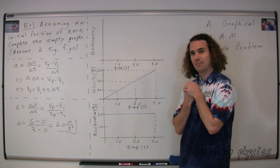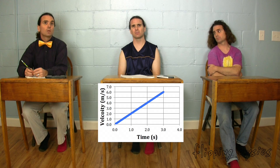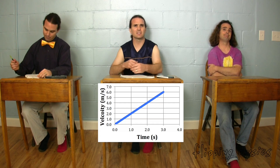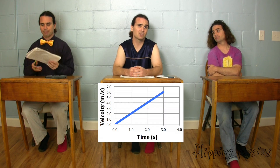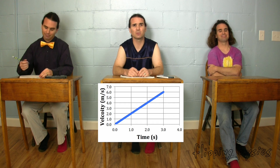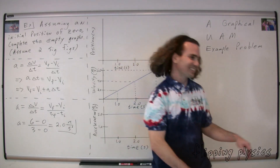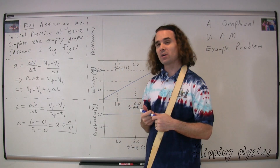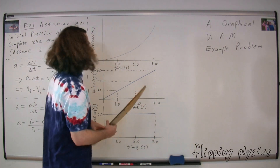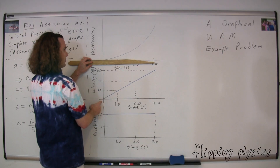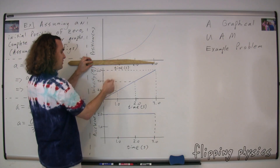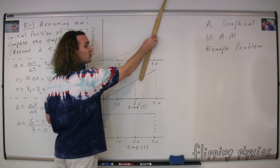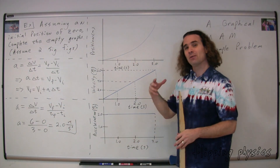Bobby, what will the general shape of the position versus time graph be? Honestly, I have no idea where to start. Remember that the slope of a position versus time graph is velocity, and on the graph the initial velocity is zero and increases from there. So the slope of the position versus time graph needs to start out at zero and then increase over time — so it's an upward sloping curve. You're going to need your magic tangent line finder to show us that. The initial slope of the tangent line needs to be equal to zero because the initial velocity is equal to zero, and as time goes by the slope of the position as a function of time graph increases because the velocity increases. You can see using our magic tangent line finder that the slope of this curve increases as a function of time. Now, this is just an approximation — we need to figure out the numbers.